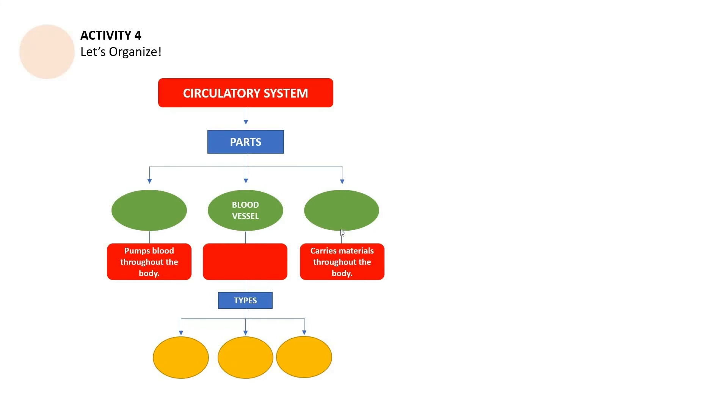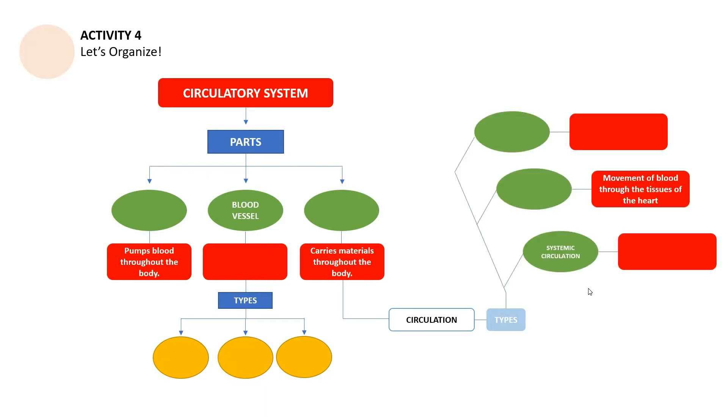Now for this last part, the part that carries materials throughout the body, we are going to talk about circulation and the different types of circulation. How many types did we discuss so far? We have three and I want you to differentiate them too. Do this on your study notebook and please label it activity four, let's organize. You may pause this video if you need some more time. Since you chose to continue this video, that means you're already through. Let's now proceed with the last part of this video, a discussion about the human heart.